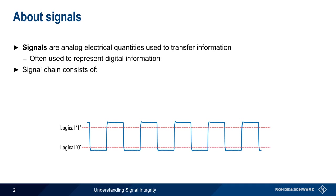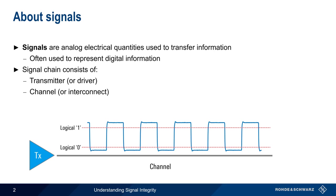A signal chain consists of three components: the transmitter or the driver, the channel or the interconnect, and the receiver.